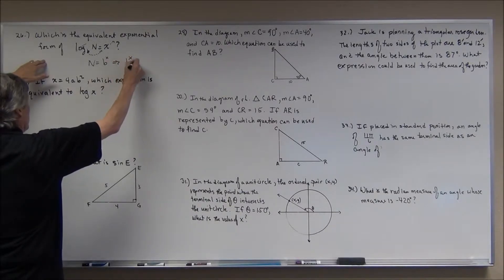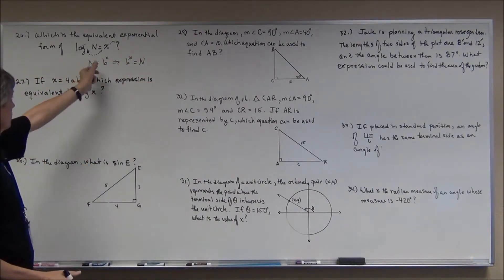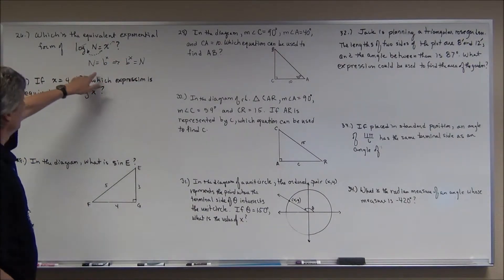I get n equals b to the x. Now, they might have this as b to the x equals n, but reflexive property or symmetric property of equality allows me to say if n equals b to the x, then b to the x equals n.